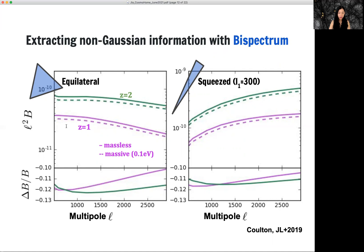One is equilateral shape, another is squeezed shape. So both of them are sensitive to the evolution of structural growth from ratio one and the ratio two.